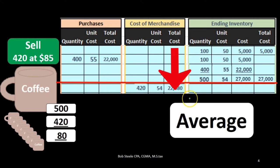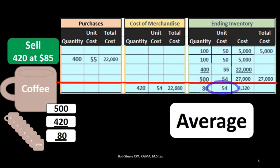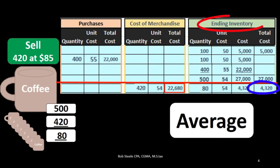The cost of goods sold in this case would be $22,680. What then would be left? We have 500 minus 420, which gives us 80 units remaining. They all cost about $54, so we have $4,320 left over. This $22,680 is the cost of goods sold for the transaction on the sale, and the $4,320 is what will remain in ending inventory on the balance sheet and trial balance.